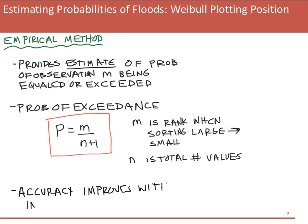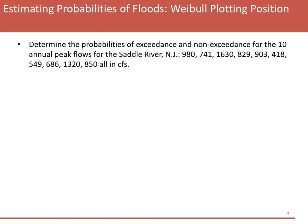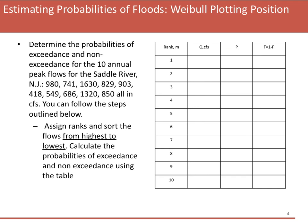As you might expect, the accuracy of this method is going to increase and improve as you increase your sample size, depending on how many samples you have. So let's do an example. We're going to determine the probability of exceedance and non-exceedance for 10 annual peak flows for the Saddle River in New Jersey. The flows are listed and they're all in CFS.